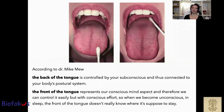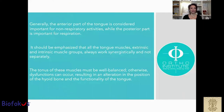According to Dr. Mew, the back of the tongue is controlled by our subconscious and is connected to the body's postural system. The front of the tongue represents our conscious mind and therefore we can control it easily, but with consistent effort. So when we become unconscious in sleep, the front of the tongue doesn't really know where it's supposed to stay. The anterior part of the tongue is considered important for non-respiratory activity, while the posterior part is important for respiration. All tongue muscles — extrinsic and intrinsic — always work synergistically. The tonus of these muscles must be well balanced; otherwise dysfunction can occur, resulting in alteration in the position of the hyoid bone and tongue functionality.